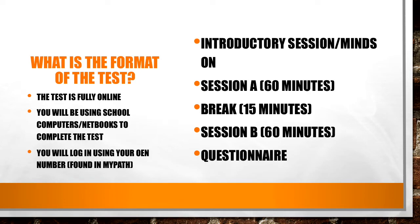What is the format of the test? The test is fully online. You will be using school computers or netbooks to complete the test. You will log in using your OEN number, which is found in Aspen — not MyPath, which no longer exists. If you look at one of your report cards or in Aspen you should see your OEN number. It's really important to have that number when you go into the test, because the government knows you as your OEN number, not as your name.